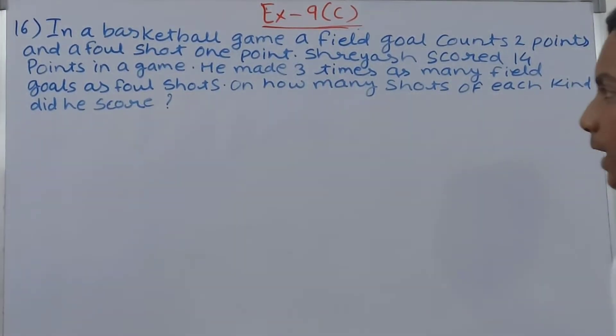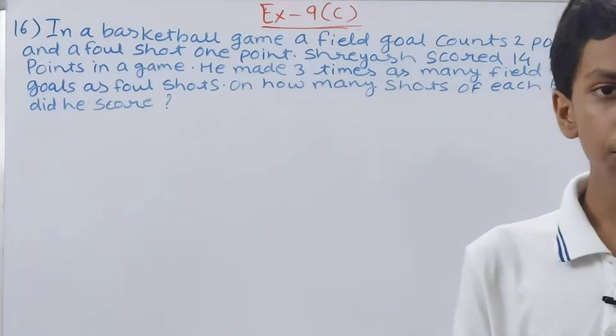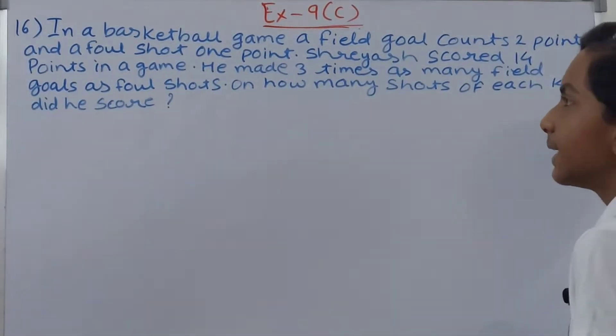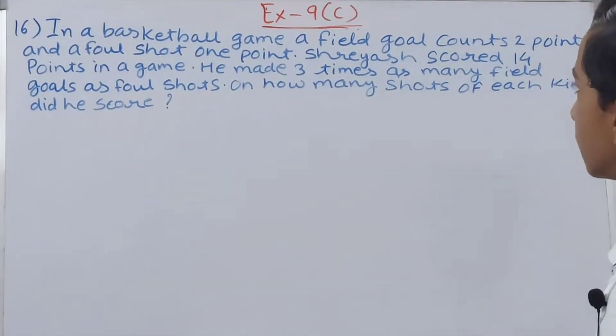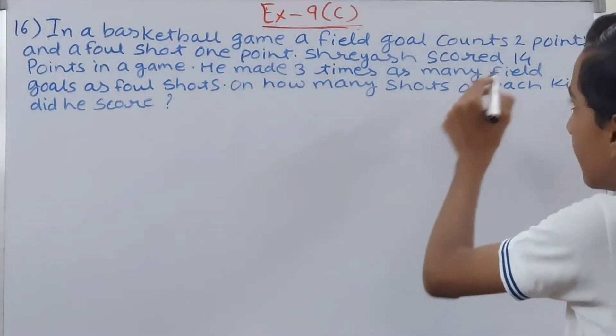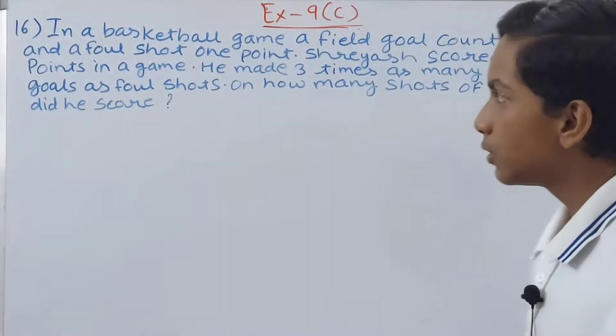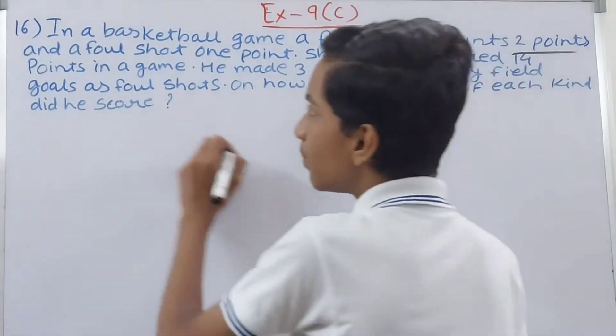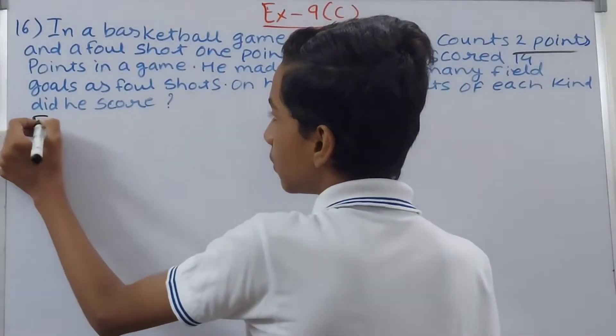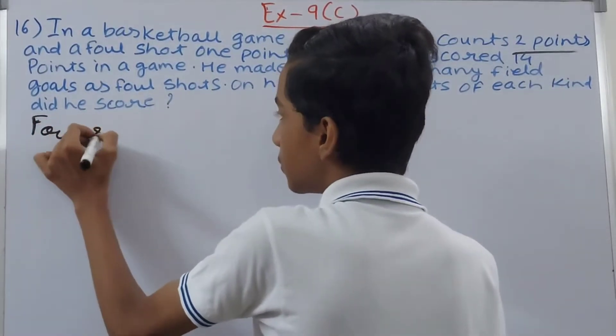We have to determine how many points he scored from field goals and foul shots. In this basketball game, a field goal is 2 points and a foul shot is just 1 point.